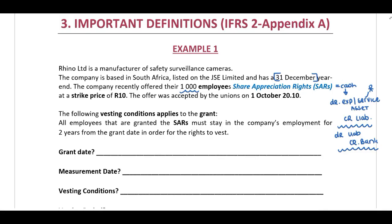The company recently offered ten thousand employees share appreciation rights at a strike price of ten rand. The offer was accepted by the unions on 1 October 2010. The following vesting conditions apply to the grant: all employees that are granted the share appreciation rights must stay in the company's employment for a period of two years from grant date in order for the rights to vest.